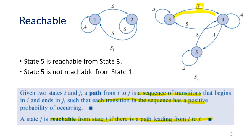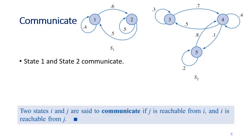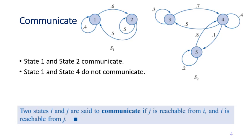Another example: state 5 is not reachable from state 1 because there is no path that can go from 1 to 5. The second term is communicate. State 1 and state 2 communicate because from node 1 you can go to node 2, and from node 2 you can find a way to go back to node 1. Formally, two states communicate if j is reachable from i and i is reachable from j. State 1 and state 4 do not communicate because there is no way to go from 1 to 4 or from 4 to 1.